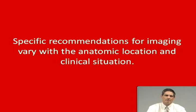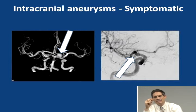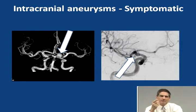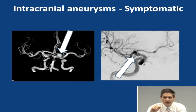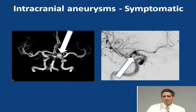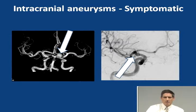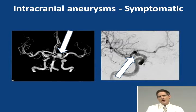Regarding intracranial aneurysms — I covered symptomatic ones in the headache lecture. Here's a 27-year-old woman with a changing pattern of migraine headaches where the CT angiogram showed an aneurysm. Migraine headaches usually don't require imaging, but it was found. On the right is the same 60-year-old man who had the worst headache of his life — a subarachnoid hemorrhage — and catheter angiography showed the aneurysm at the arrow. He later had a coil placed in that aneurysm and did well postoperatively.